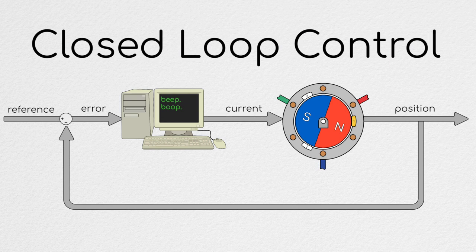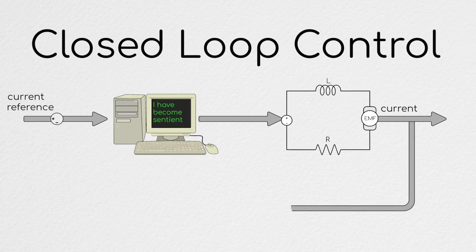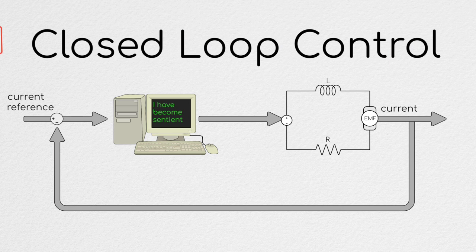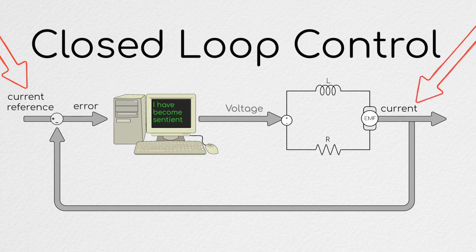However, we don't have a way of just dictating an exact amount of current running through the motor. Instead, we have to make a second, nested controller here, which looks at the current we want running through our motor as dictated by the first controller. It then compares it to the current we have running through our motor and modulates the voltage being applied to our motor phases based on the error between the actual current and the desired current. Cool. So that's a super basic overview of what closed-loop current control is.